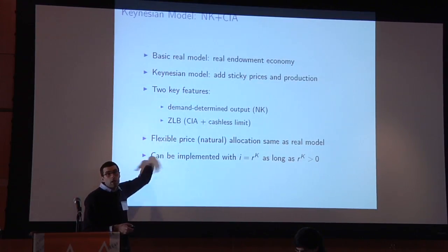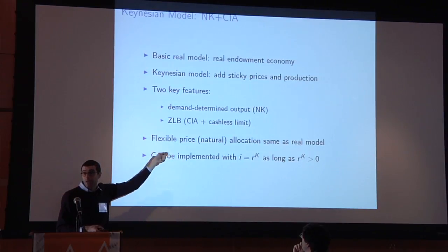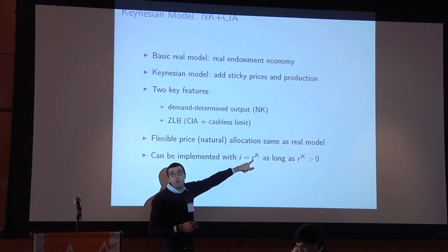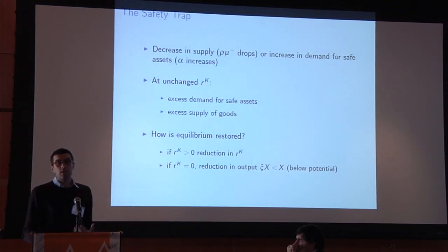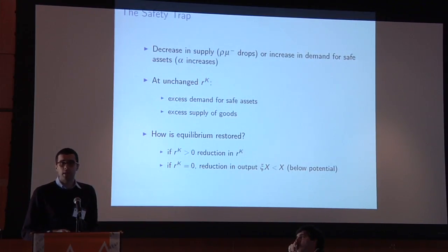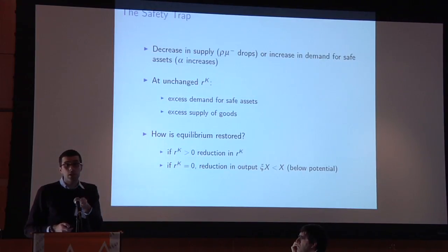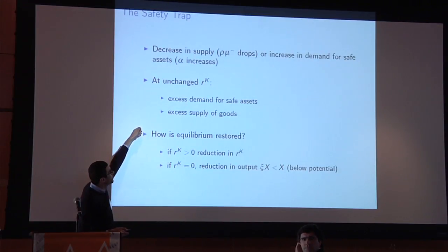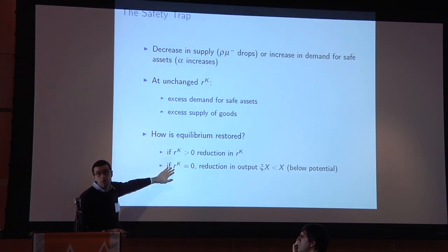If prices were flexible, the equilibrium would be the same as the endowment economy I described before. Even with sticky prices, as long as the interest rate is positive, you can achieve that flexible-price allocation by setting the nominal interest rate equal to the natural interest rate. But now imagine the supply of safe assets goes down. As it goes down, the safe interest rate drops, and at some point it reaches zero. At an unchanged interest rate, you have excess demand for safe assets and excess supply of goods. If the interest rate is positive, it simply declines; but if it's already zero, it can't go down anymore — something else has to give.